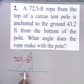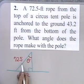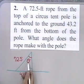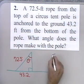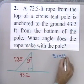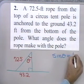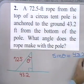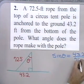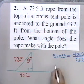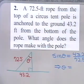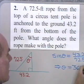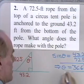I have the opposite side, which is 43.2 feet, and the hypotenuse, which is 72.5 feet. The trigonometric ratio that relates this angle theta with the side opposite and the hypotenuse is the sine ratio. So the sine of theta is equal to 43.2 divided by 72.5. Working this out on a calculator gives me theta equal to 36.6 degrees to the nearest tenth of a degree.